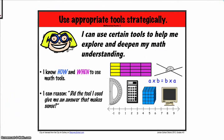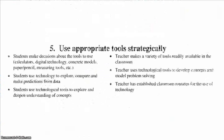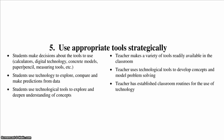Number five: use appropriate tools strategically. Mathematically proficient students consider the available tools when solving a mathematical problem. These tools might include pencil and paper, concrete models, a ruler, a protractor, a calculator, a spreadsheet, a computer algebra system, a statistical package, or dynamic geometry software. Proficient students are sufficiently familiar with tools appropriate to their grade or course to make sound decisions about when each of these tools might be helpful, recognizing both the insights to be gained and their limitations. For example, mathematically proficient high school students analyze graphs of functions and solutions generated from a graphing calculator. They detect possible errors by strategically using estimation or other mathematical knowledge.